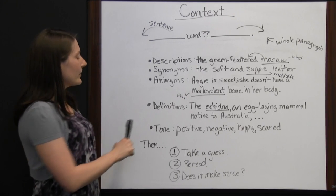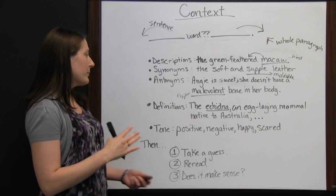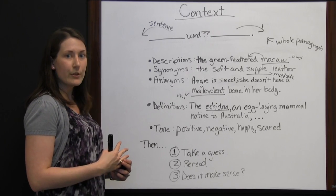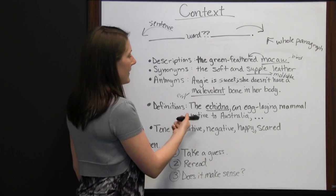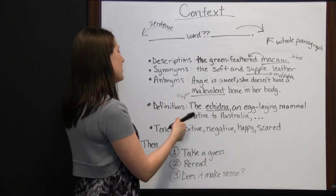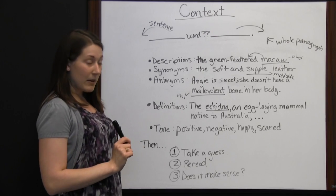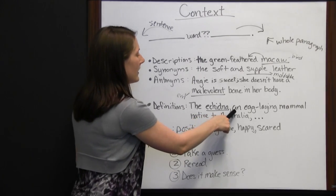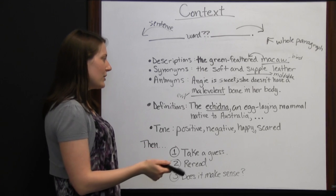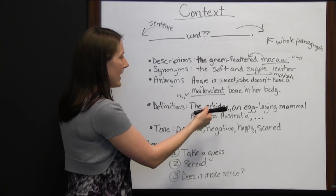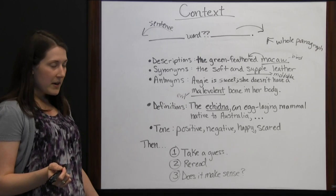Another clue you can look for are definitions. Sometimes the sentence before, after, or part of the same sentence your word is in will just give you the definition of the word. For instance, 'the echidna, an egg-laying mammal native to Australia.' Right after echidna in commas is the definition — an egg-laying mammal native to Australia — so you know what it is right there.